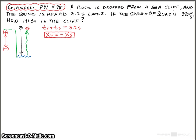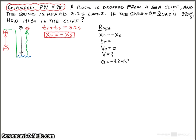Let's begin with the rock and write down all the information we know. The displacement of the rock equals the negative displacement of the sound. The time the rock falls — we don't know that. The initial speed of the rock is zero. The final velocity — we don't know that yet. The acceleration is negative 9.8 meters per second squared, since the rock is speeding up as it falls. Let's put a box around this to keep our work neat.